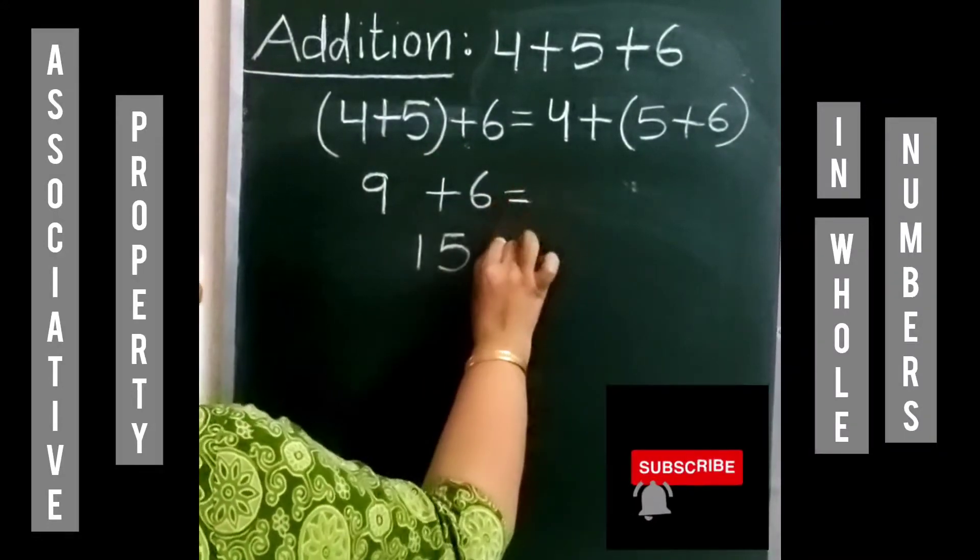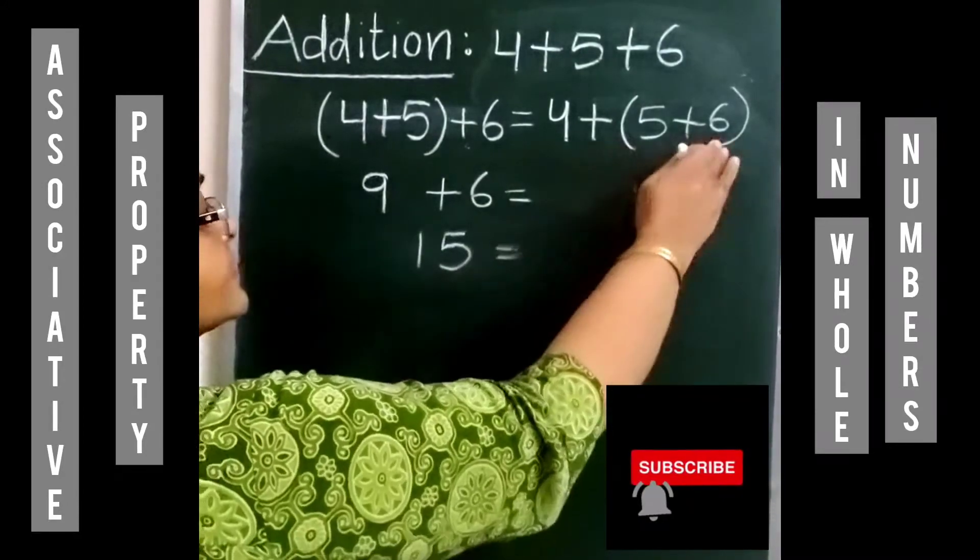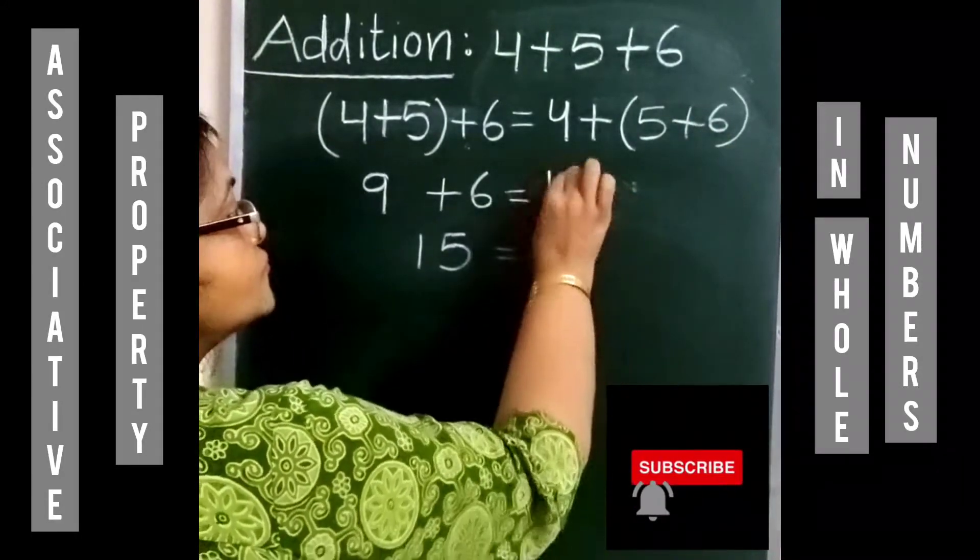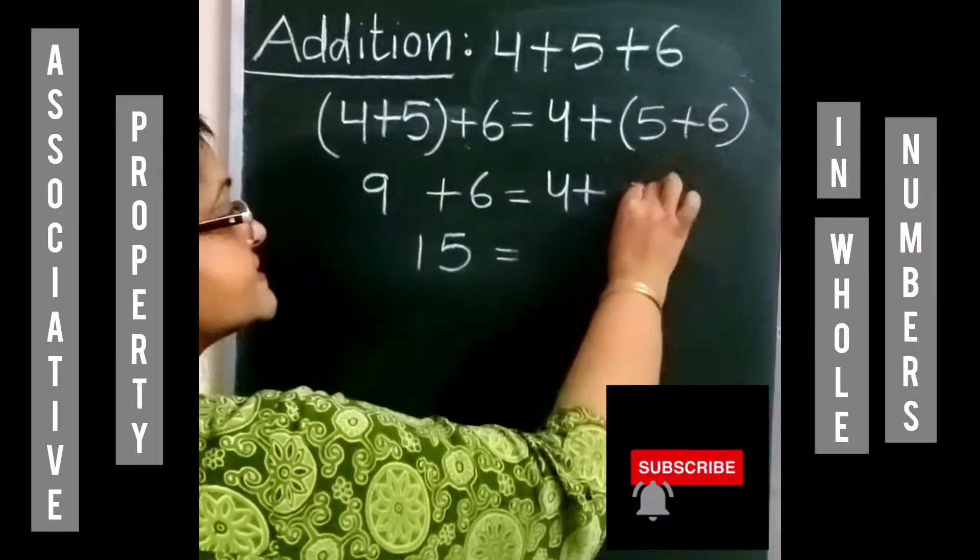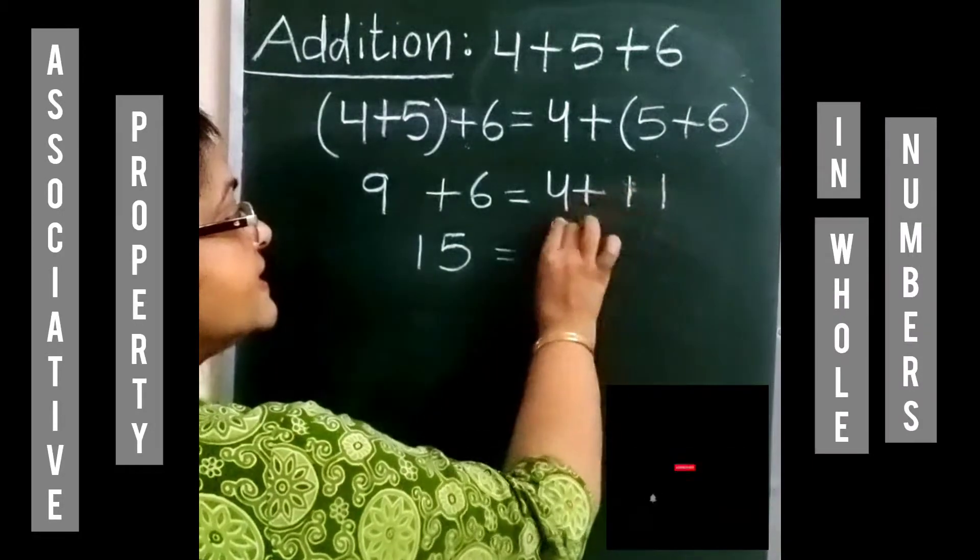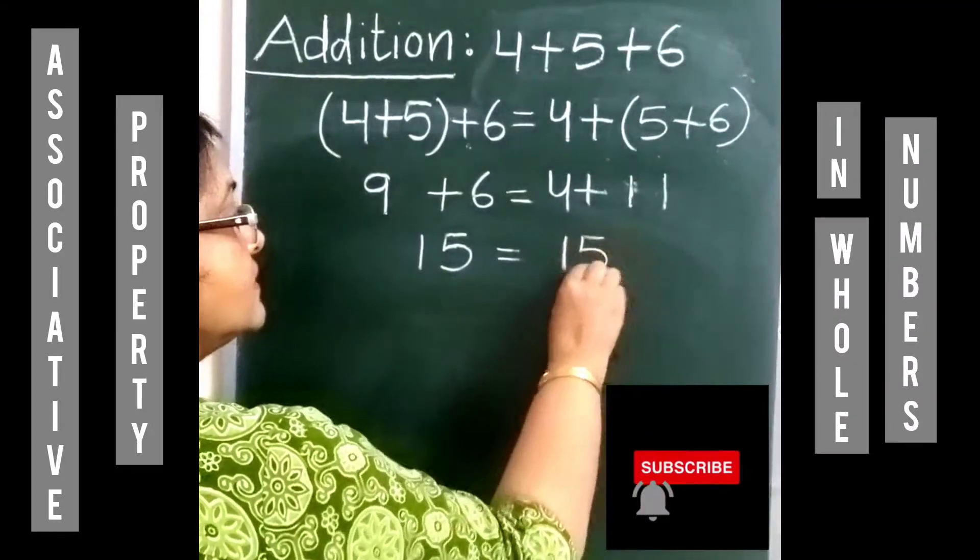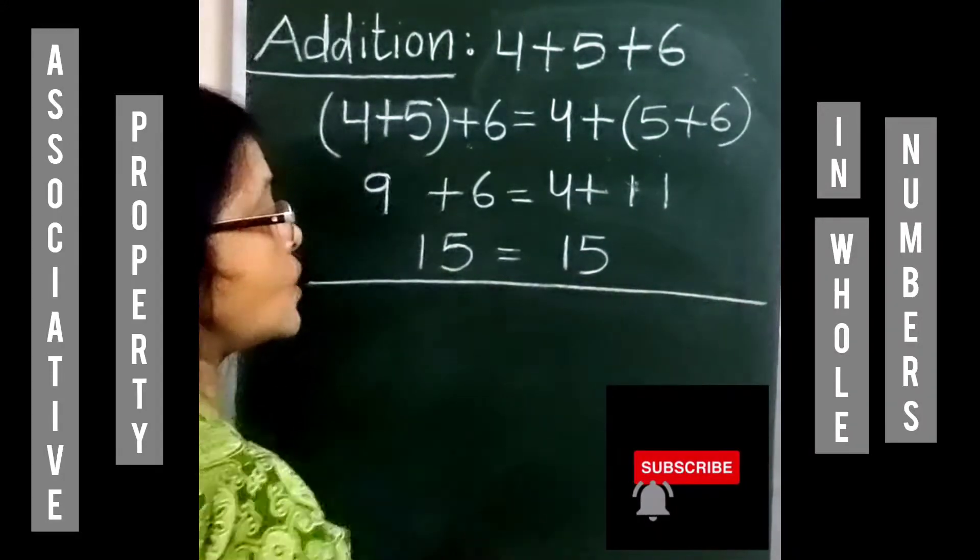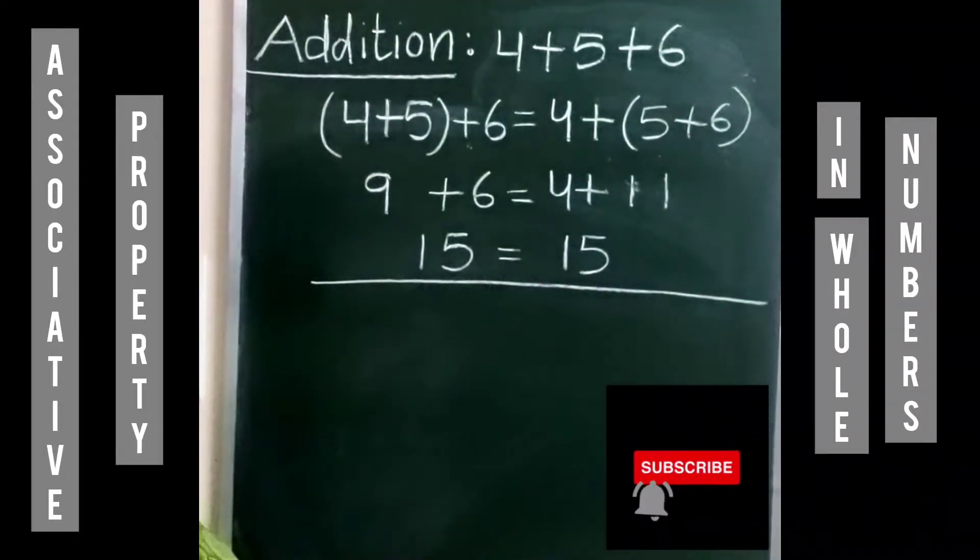Now if we change the groups, here I have made the group of 5 and 6. So 4 plus the sum of 5 and 6 is 11. 4 plus 11 is also 15. So we can see in both cases we have got the same result.